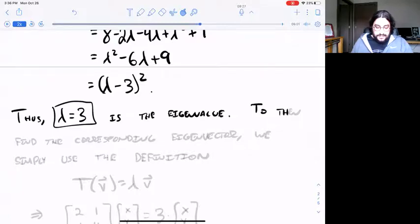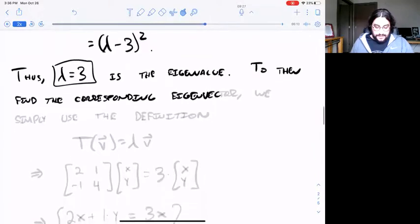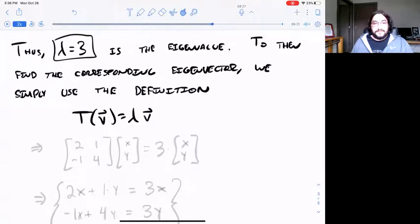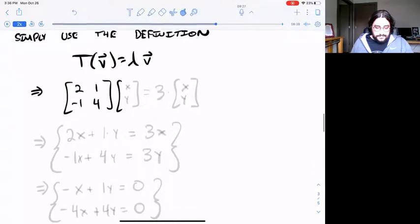Then once we know lambda equals three, now we can find the corresponding eigenvector. So we want to use the definition T(v) equals lambda v. Now we know a numerical value for lambda. Just plug that in and then solve the resulting equation. So we have lambda equals three, plug in that number.